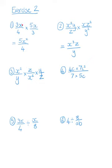The first one is 3x divided by 4 times by 5x divided by 3. Now it's relatively easy to do — we're just going to cancel 3 with 3, which will leave us with x times x, which is x squared.